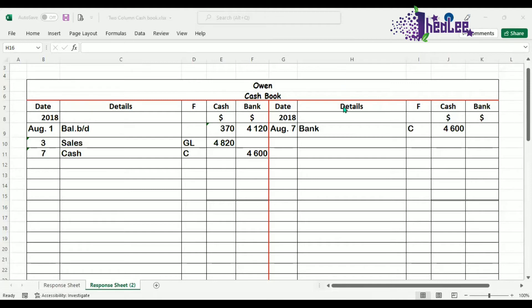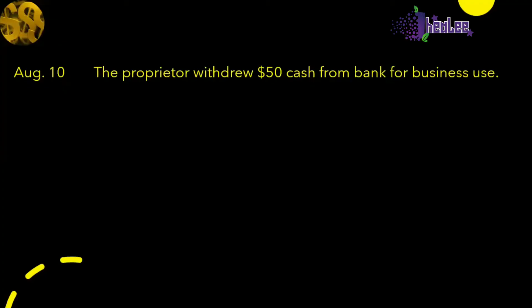Let's look at a few transactions to determine whether or not they are contra-entries. The first one, August 10th: the proprietor withdrew $50 cash from bank for business use. Because it said that this cash was taken from the bank account for business use, the two items affected are cash and bank. Because we have cash and bank affected by the same transaction, that is a contra-entry.